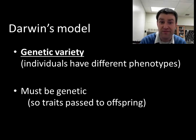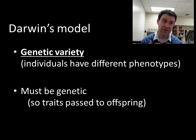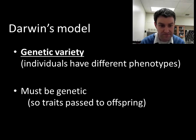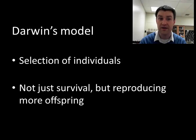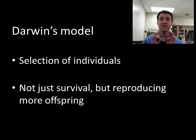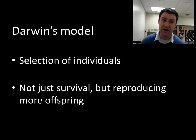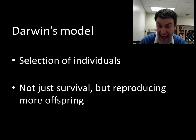There have to be differences among individuals in order to select from something. In Darwin's system, this has to be genetic, because if it's not genetic, then reproducing more offspring won't change the population over generations. There has to be selection of individuals. To be selected for doesn't just mean you survive longer — in nature, if you survive longer you probably reproduce more. The key point is that certain phenotypes and alleles are more represented in the next generation, so the organism that survives longer must reproduce more.